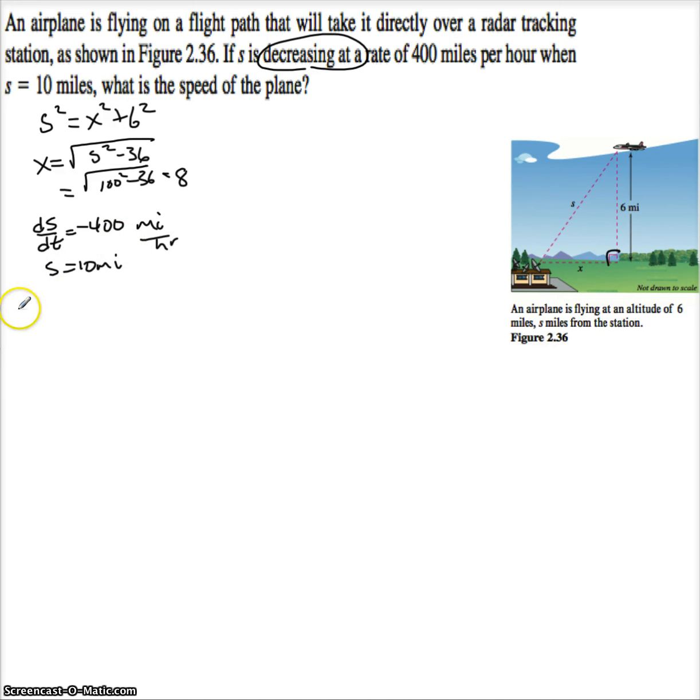I'm looking for the speed of the plane. So the speed of the plane is equal to what? dx dt. Now it's only dx dt because it's moving horizontally. So I know my velocity is only in X.